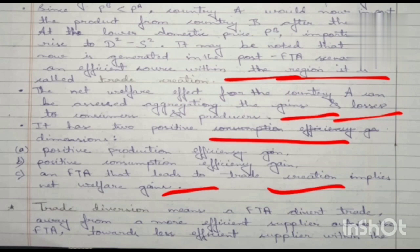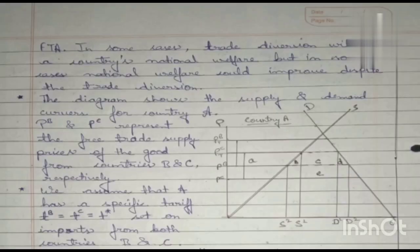Trade diversion means an FTA diverts trade away from a more efficient supplier outside the FTA to a less efficient supplier within the FTA. In some cases, trade diversion will reduce a country's national welfare, but in some cases national welfare could improve despite the trade diversion.